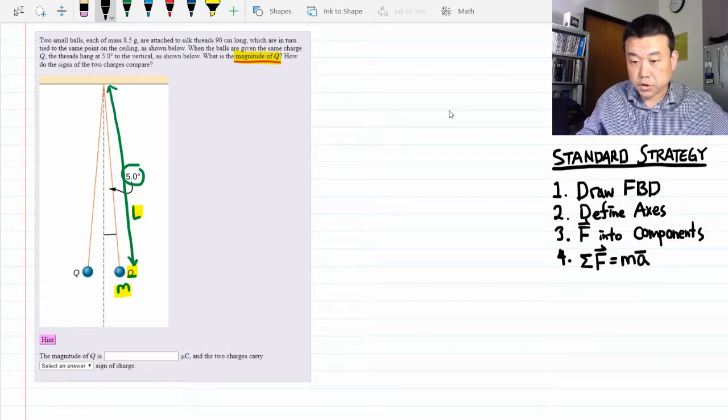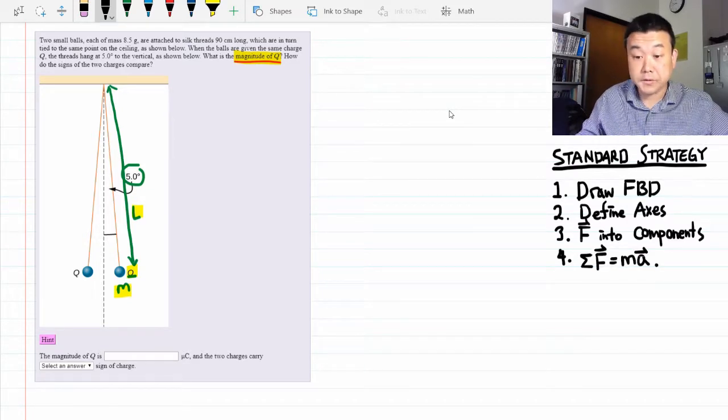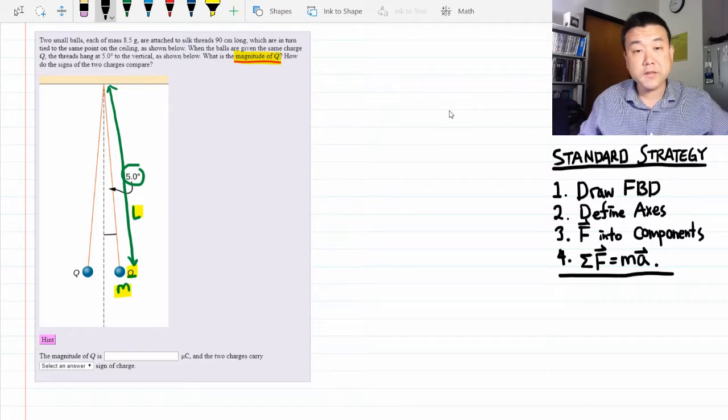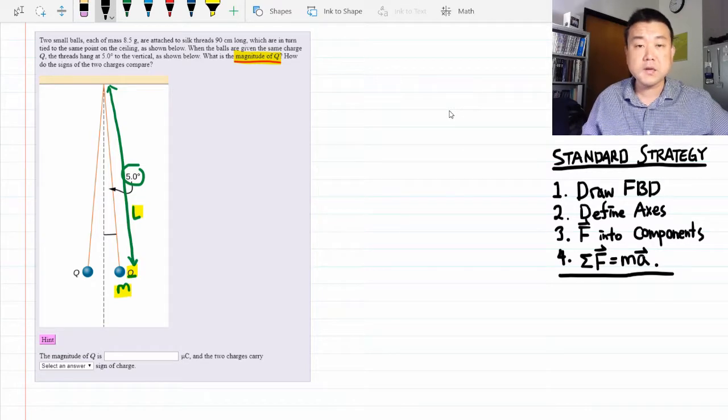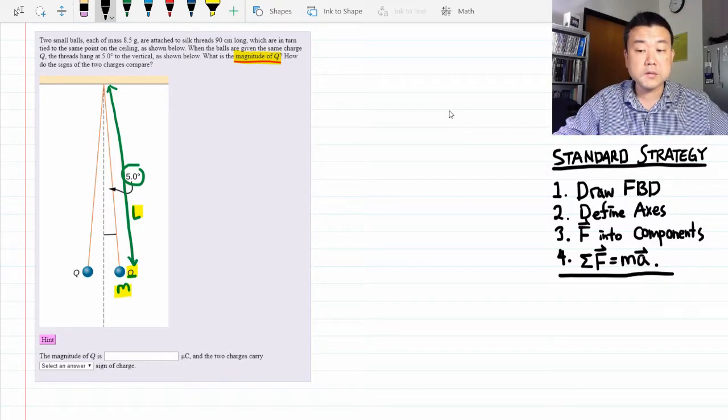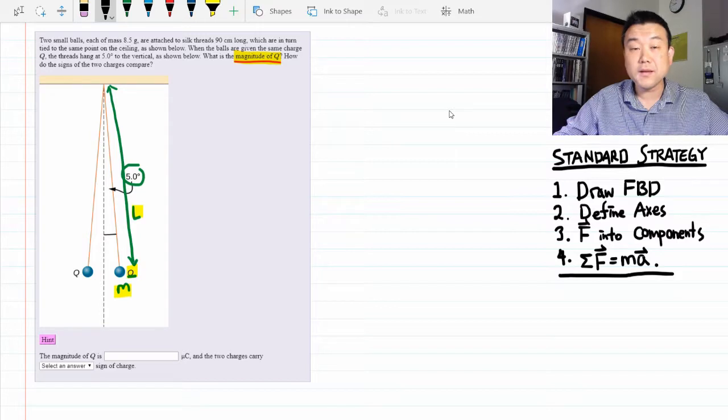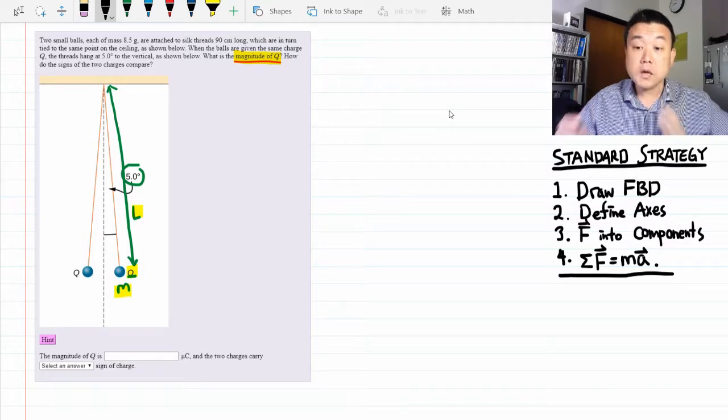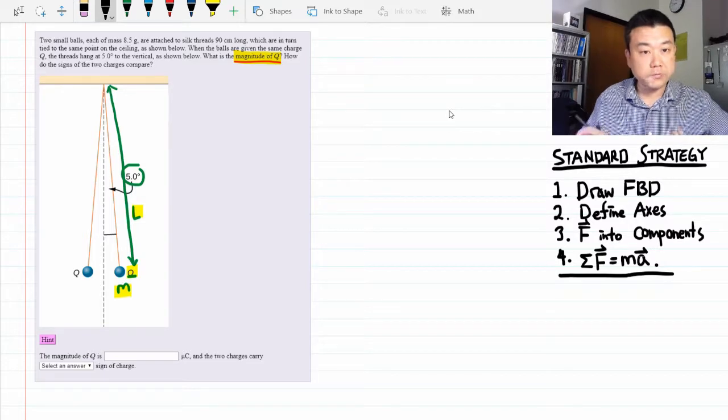Now, what you should realize is that you are not actually done solving the question, because this standard strategy isn't meant to spit out the answer. It's meant to take you to a place where you have a system of equations. So now you can apply math for the remainder of the question and solve for whatever quantity is asked for. That's what we're going to apply to this problem.